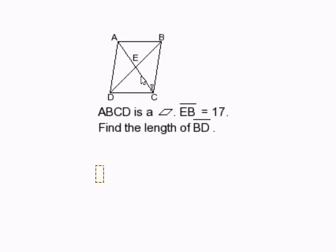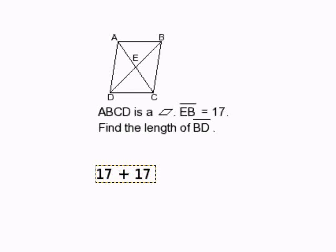So if we want to find the whole length of BD, we can simply say 17 plus 17 is 34. And that completes our problem.